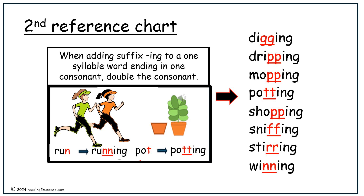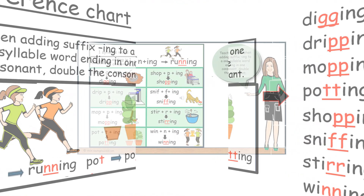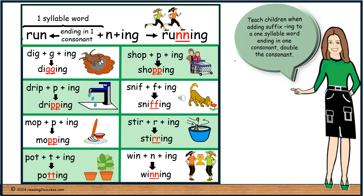Second reference chart. When adding suffix -ing to a one-syllable word ending in one consonant, double the consonant. Examples include: digging, dripping, mopping, potting, shopping, sniffing, stirring, and winning. With kids, review the word running — since run is a one-syllable word ending in one consonant, N, double the N and add -ing, making the word running. Continue reviewing the words below as done above.